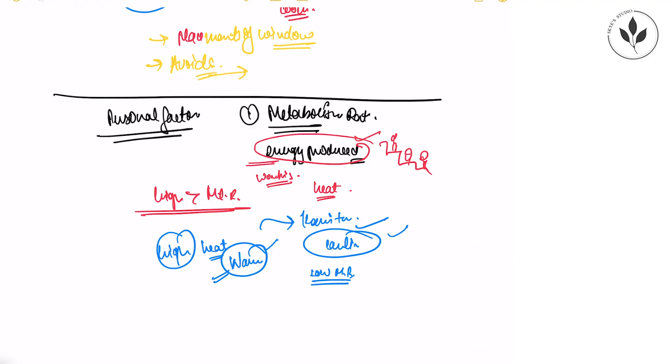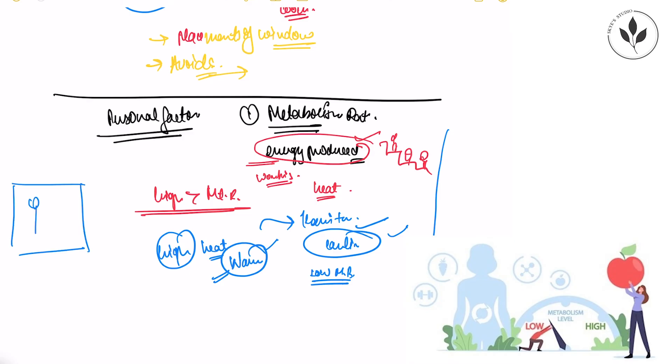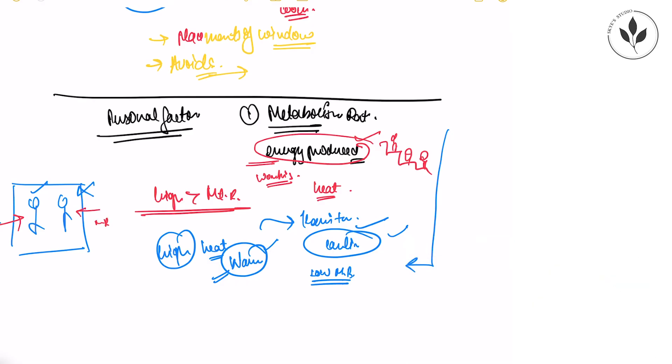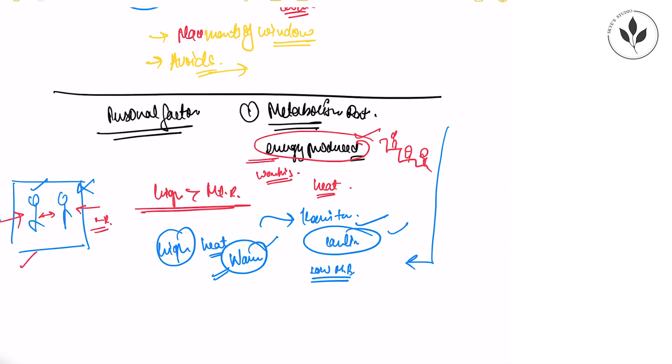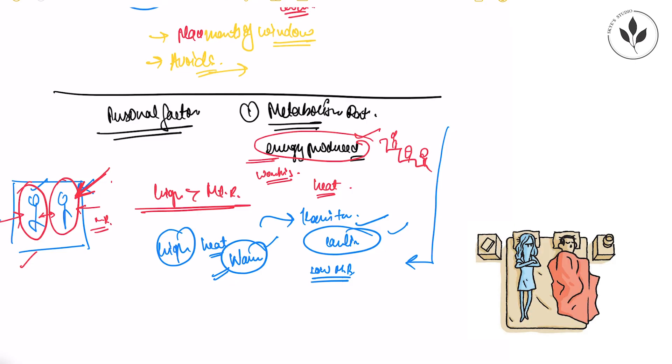So metabolism rate for every human being is different and obviously this will affect the thermal comfort. The same example goes here. When you are sleeping in a room, one person might feel cold in AC and the other person might not. Because the metabolism rate of this person who is feeling cold is less and the person who is feeling hot, the metabolism rate of this person is more. And what is the difference between these two people? If they are working out in a gym, this person will sweat more and this person will sweat less. Because the energy produced by this person is more. More the energy, more the heat. That is why more the sweating.